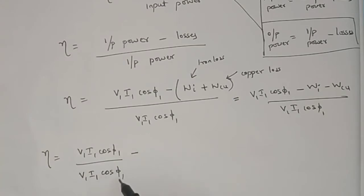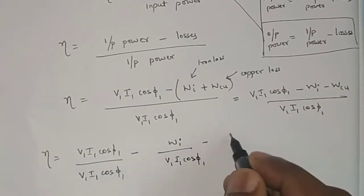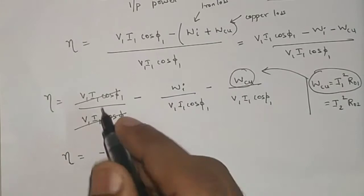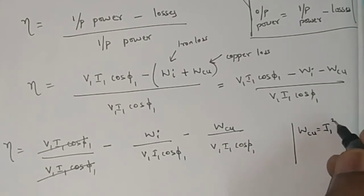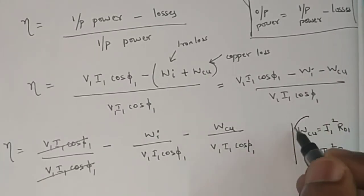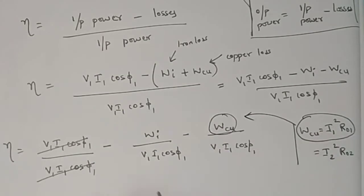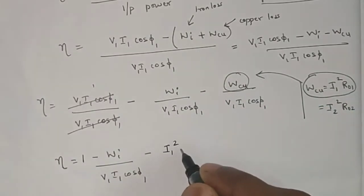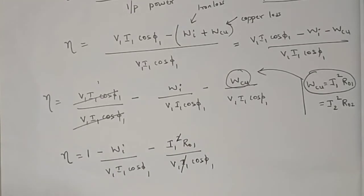Now I will split the numerators: eta equals V1·I1·cos φ1 divided by V1·I1·cos φ1, minus iron loss divided by V1·I1·cos φ1, minus copper loss divided by V1·I1·cos φ1. Simplifying, the first term cancels to give 1. Now, we know the copper loss formula: copper loss equals I1²·R01, which is also equal to I2²·R02. In the place of copper loss I will substitute I1²·R01.